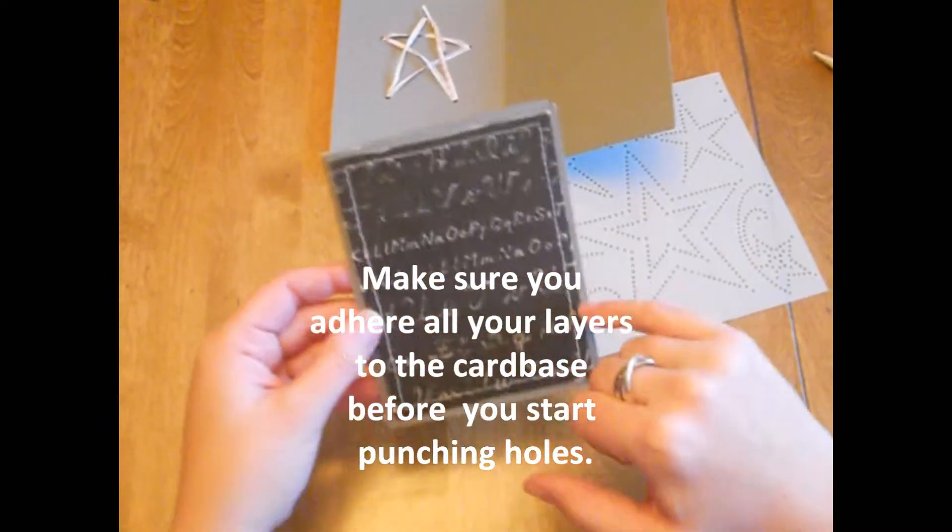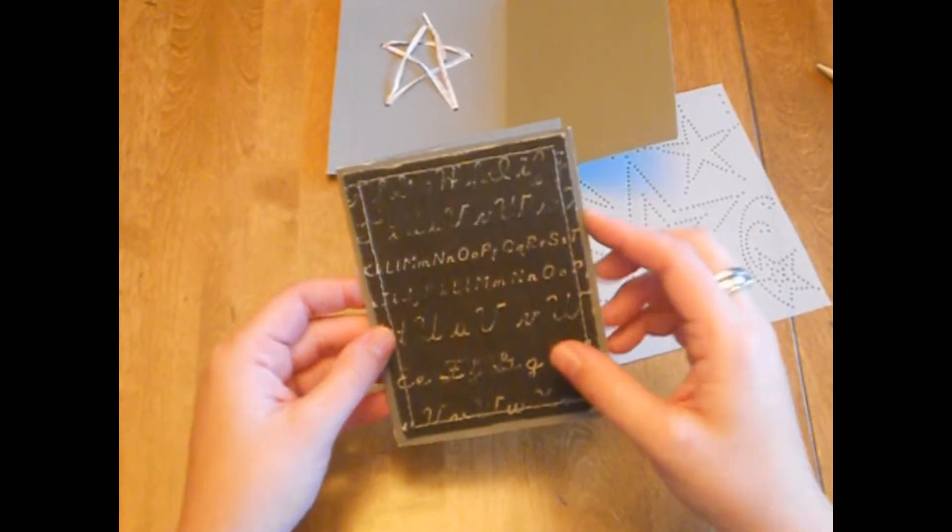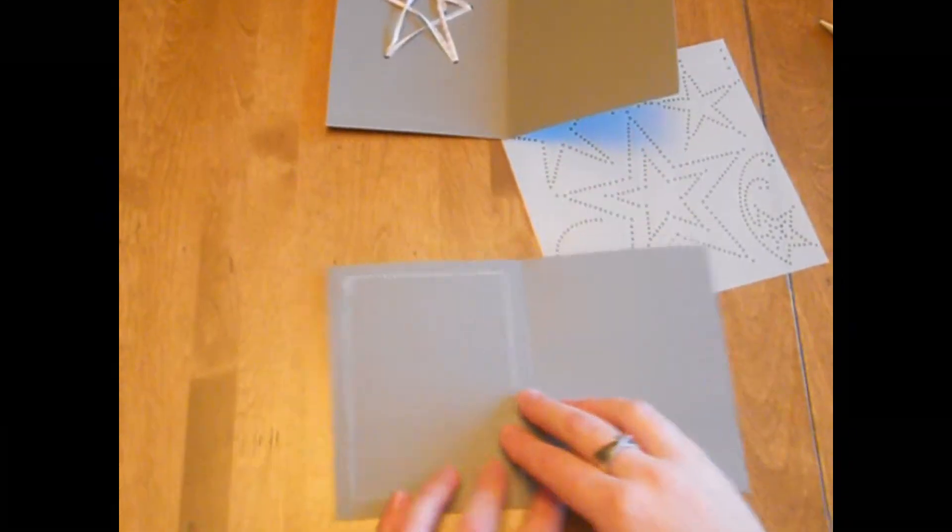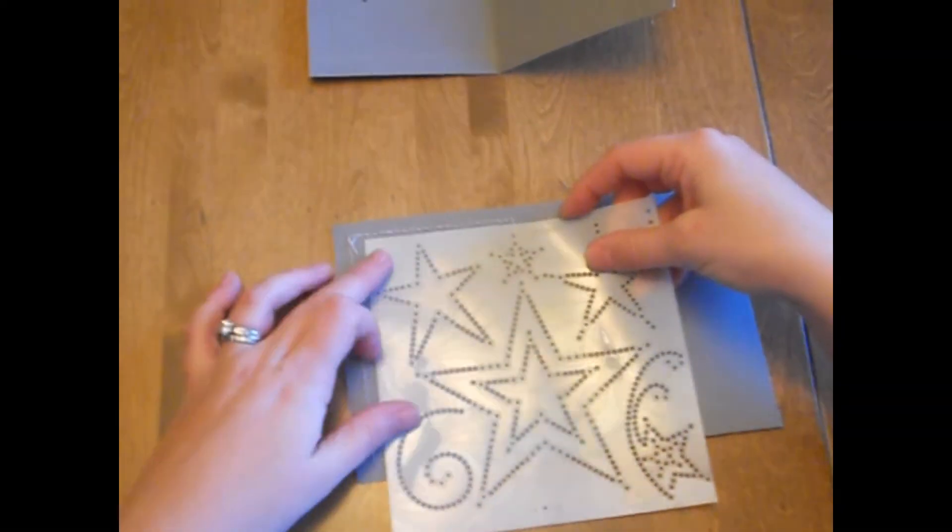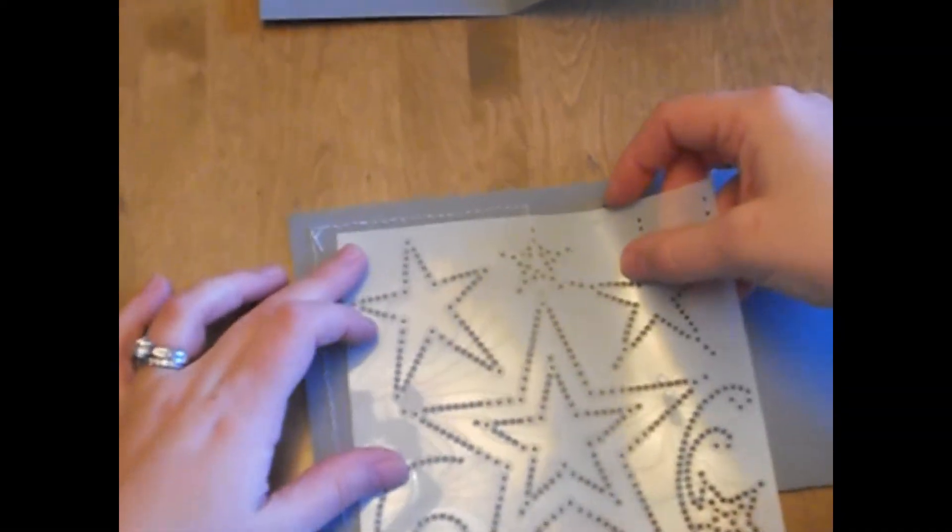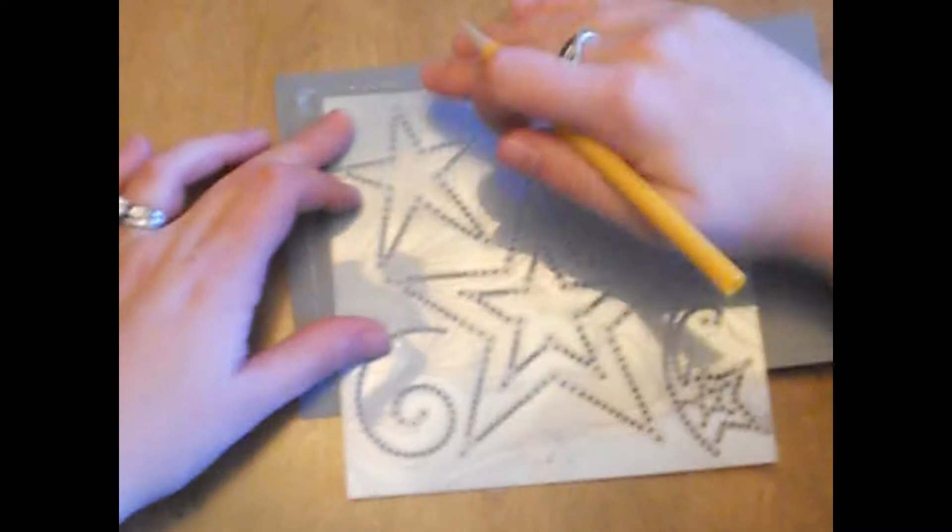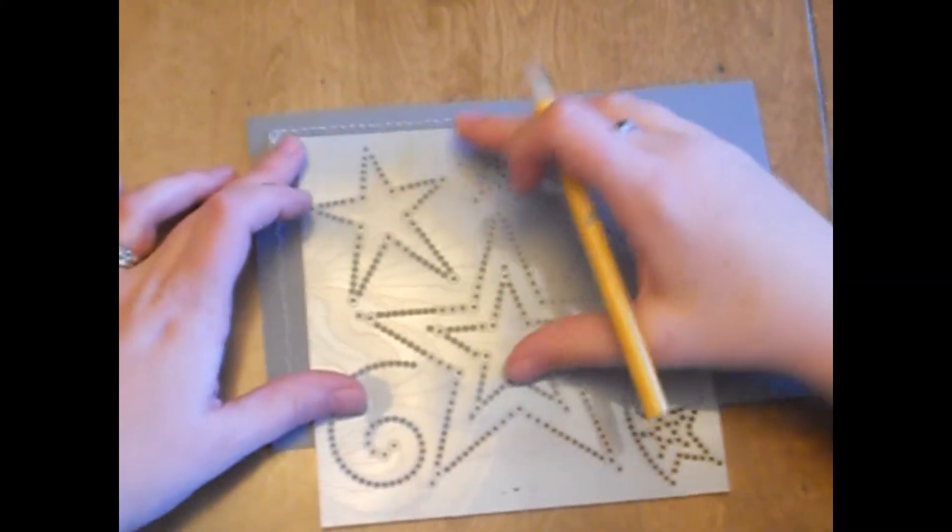If you're going to sew or mount anything on here, I would do that first before you do this. So just open it up. Pick the image that you want. I'm going to use this star. And I want to make sure it's towards the top of the card so I can fit my sentiment in down there.